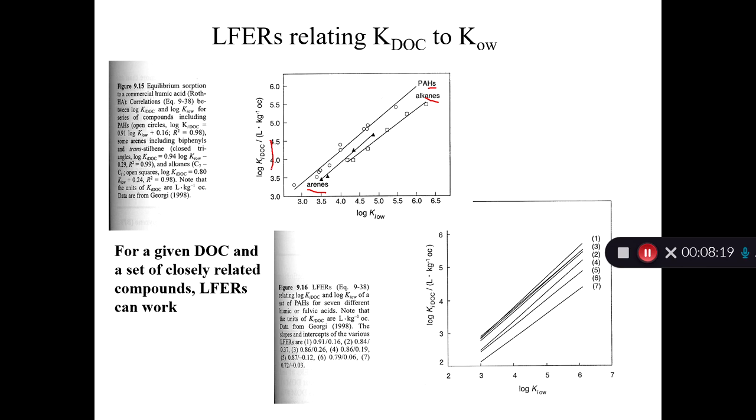So in this upper figure, here's a line for arenes and for alkanes and for PAHs, but they're not the same line. You have to have a separate line for each of these classes of chemicals. Again, this is log KDOC as a function of log KOW. Down here in the lower figure, this is one set of chemicals. So this is a set of PAHs, and it's seven different types of humic and fulvic acid. That's the seven lines you see here. And so for the same set of compounds, you get different linear free energy relationships depending on the source of the DOC.